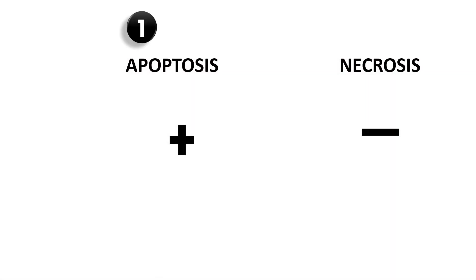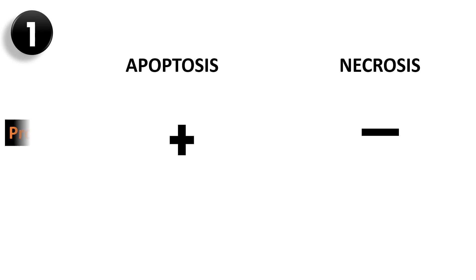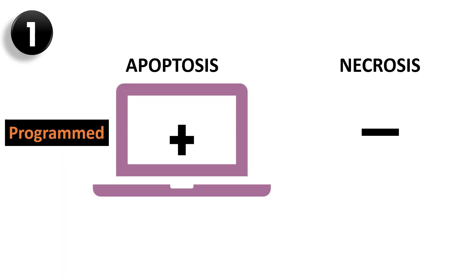The first difference is found in the definition itself. Apoptosis is a programmed cell death, while necrosis is not a programmed cell death — it is actually caused by external stimuli.